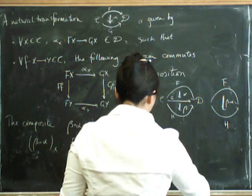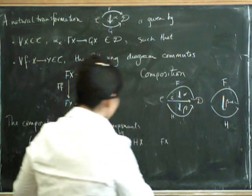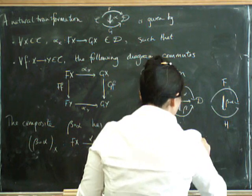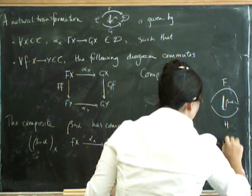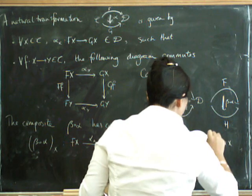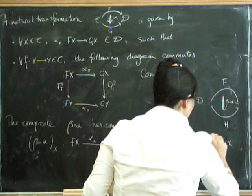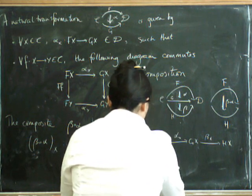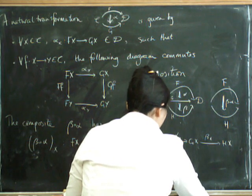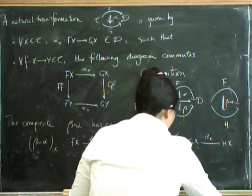Here's the naturality square. I could have just drawn it under there, but perhaps it would be confusing. Right. So here's the component of beta composed with alpha at X, and here's the component at Y.